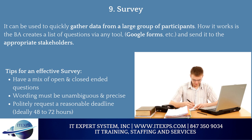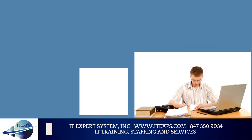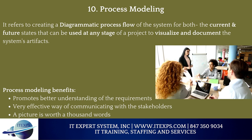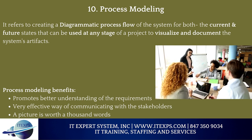Number 9: Surveys. These can be used to quickly gather data from a large group of participants. The BA creates a list of questions via any tool, such as Google Forms, and sends it to the appropriate stakeholders. Tips for an effective survey: have a mix of open and closed-ended questions, ensure wording is unambiguous and precise, and politely request a reasonable deadline — ideally 48 to 72 hours.